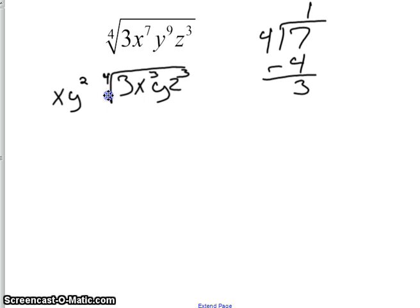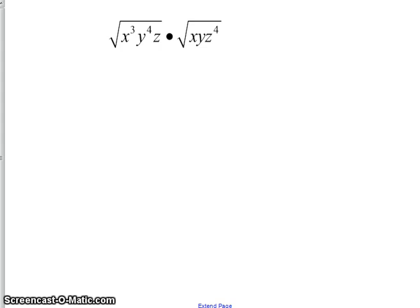One more problem. This one has to be multiplied together before you can simplify it. And so since both expressions are both under the square root, we can just multiply, which means we're going to add the exponents. So x to the third times x makes x to the fourth. y to the fourth times y is y to the fifth. z times z to the fourth is z to the fifth.